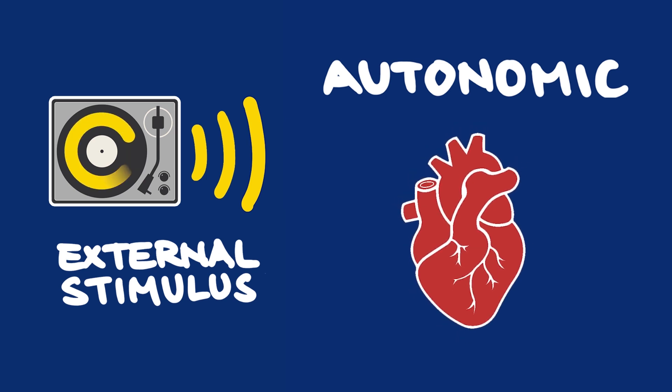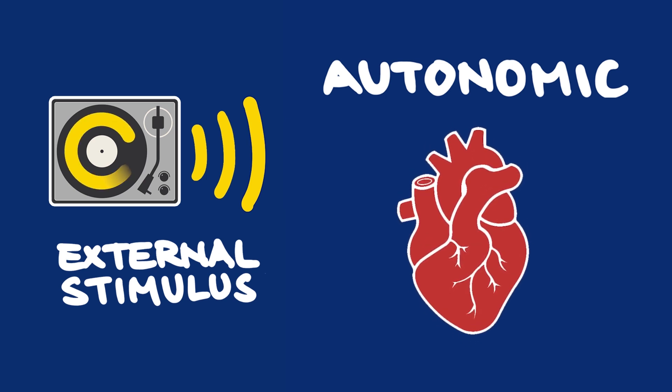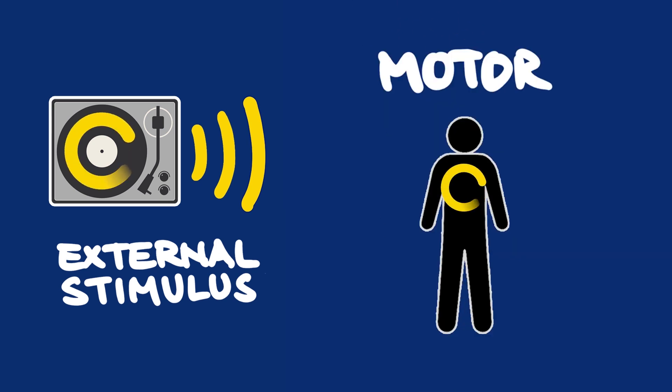The fourth level, motor entrainment, involves conscious physical movement and depends on perceptual entrainment. This is quick — as soon as you perceive a clear beat, you can move along to it. This is the process of keeping rhythm while dancing, singing, or playing an instrument.